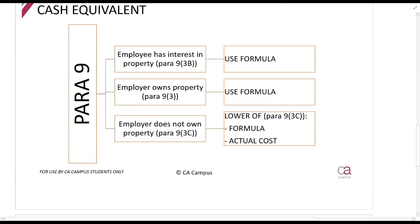Again, I've never seen them test this. So here are the requirements for all three different situations. Paragraph 9 tells us how to determine the cash equivalent. First thing I want you to see: there's a formula. The only one where you use the formula or actual cost, the lower of the two, is when the employer does not own the property.